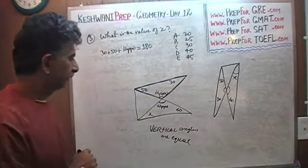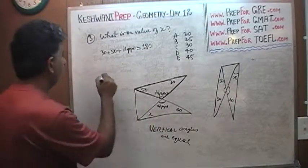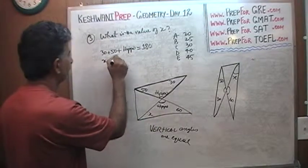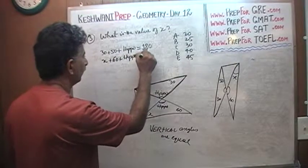What else do we know? We also know that in the bottom triangle the sum of the three angles has to equal 180. So x plus 60 plus hippo also equals 180.